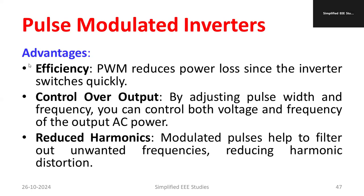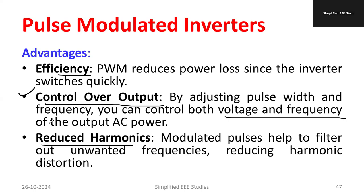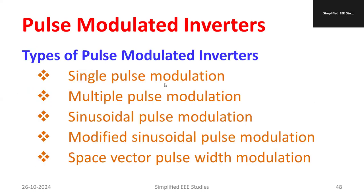The main advantage of a PWM inverter compared to other types is efficiency. Control is also very easy — we can easily adjust the voltage and frequency by changing the width of the pulses. Additionally, the harmonic content is less compared to other inverter types, which reduces the requirement for additional filters and minimizes system complexity.